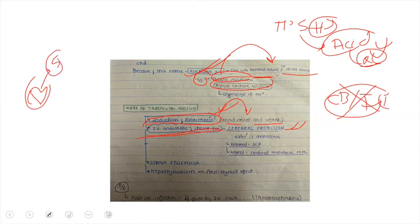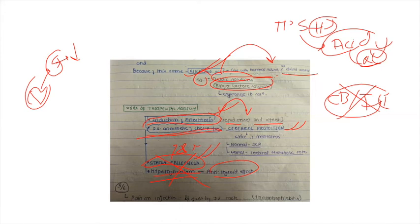Being a barbiturate it depresses the brain, so it can be used in conditions where the brain is hyper-excited — that is known as status epilepticus. It also has an antithyroid effect, which may be useful in refractory cases of hyperthyroidism, although we have better drugs for that purpose.